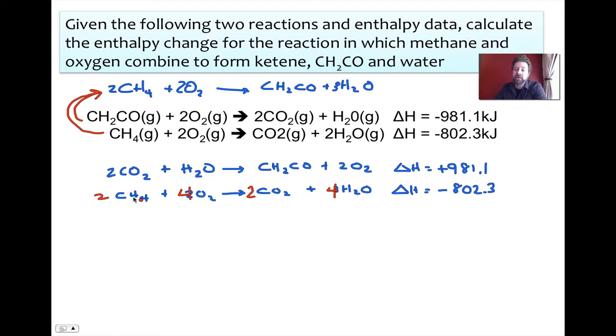Now, if I multiply this equation by two, it also means I have to multiply this delta H by two. So in this case here, I'm going to have to do some math in order to get this right. So 802.3, if I double it, it's going to be negative 1604.6. And that means I can get rid of this one here, so it doesn't confuse me in the future.